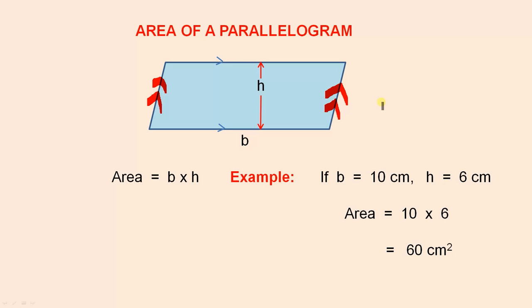To find the area of a parallelogram, all you need is the length of the base and the perpendicular height. And would you believe, the area is b times h. So if b is 10 and h is 6, the area is 10 times 6, which is 60 square centimeters.